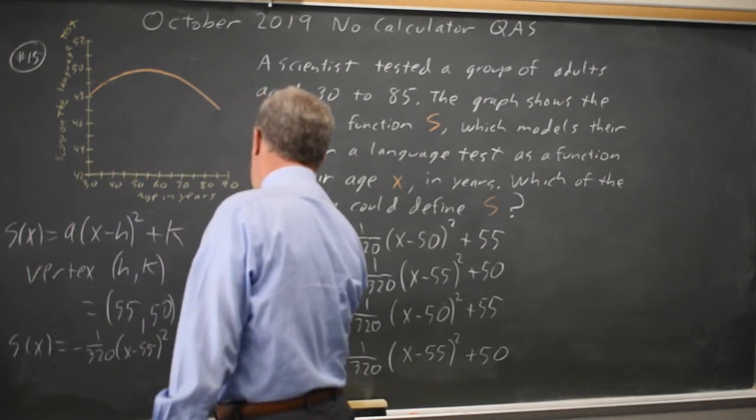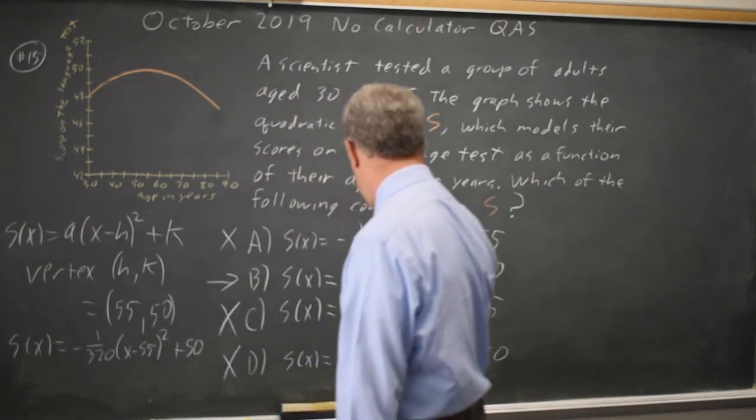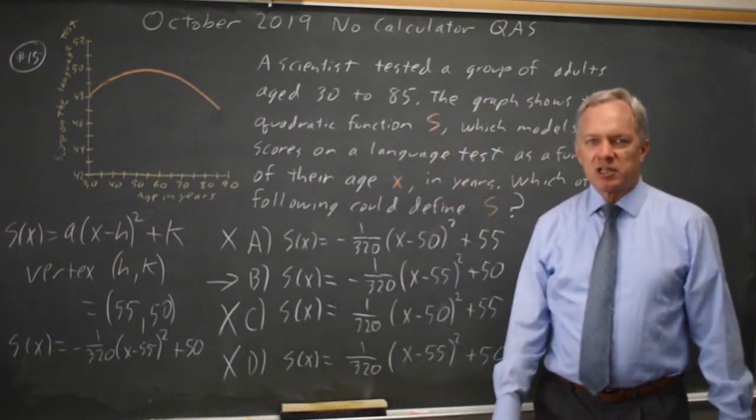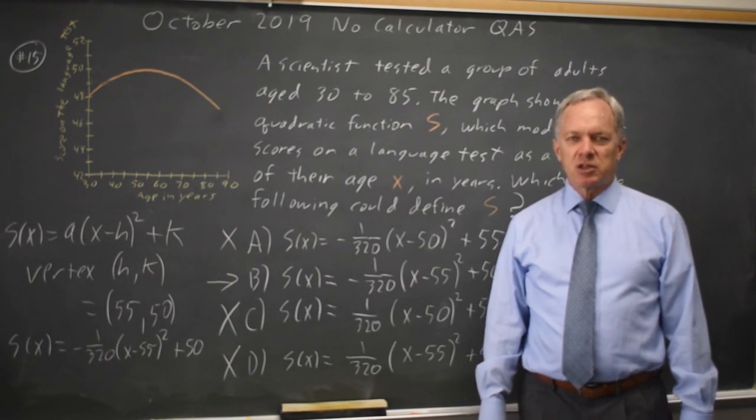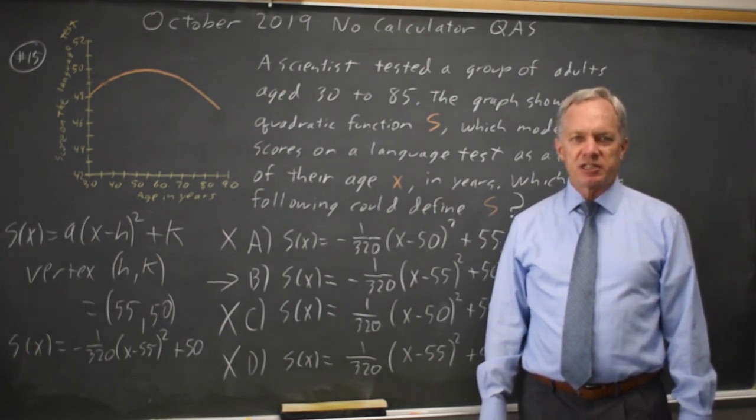So that would be choice B and not choice A. By identifying the fact that the parabola opens down and the coordinates of the vertex, we can eliminate three of the four choices and identify the correct answer.